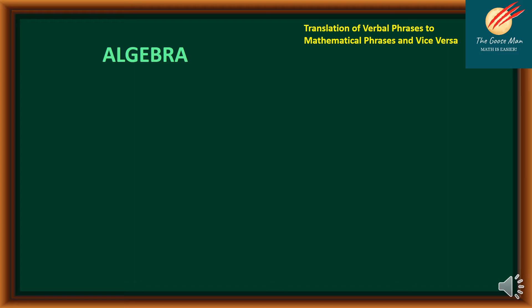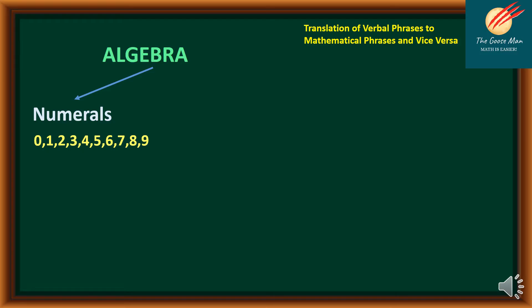Before we move on to translation of verbal phrases to mathematical phrases and vice versa, let us recall first the structure of algebra. Algebra is composed of numerals, meaning the symbols 0, 1, 2, 3, 4, 5, 6, 7, 8, and 9.